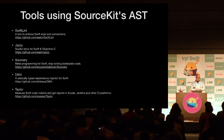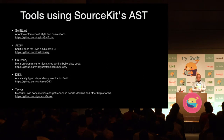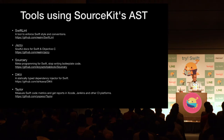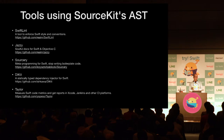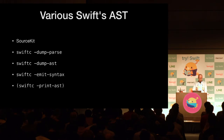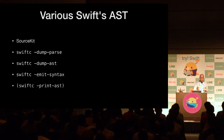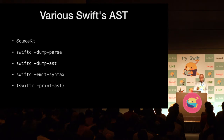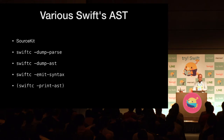Let's look at Swift AST. Those tools use AST generated by SourceKit, but Swift AST is not just what SourceKit provides. Let's look at the various Swift ASTs we can get. These listed here are the ways we can get AST in Swift. Each format is different, and each AST contains different information. I will show the difference of each AST.